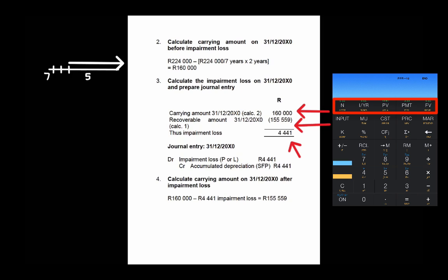The journal entry to record this loss is a debit to profit and loss in the statement of profit and loss and other comprehensive income, and a credit to accumulated depreciation. The carrying amount after the impairment loss will therefore be the 160,000 calculated after depreciation, reduced by the impairment loss, giving a new carrying amount equal to the recoverable amount at the end of the reporting period.